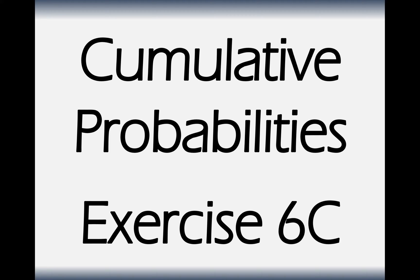What you're working out when you calculate a cumulative probability is the probability of that number of successes or fewer. So if you're flipping a coin 10 times and you want the cumulative probability of 5 successes, you want the probability of 0 successes, add 1 success, add 2, add 3, add 4, add 5 successes — adding up all those probabilities.